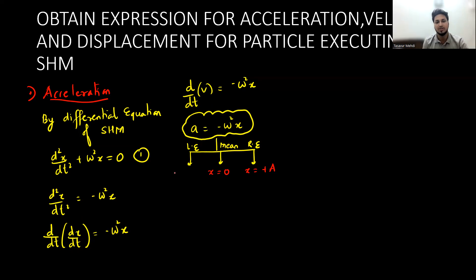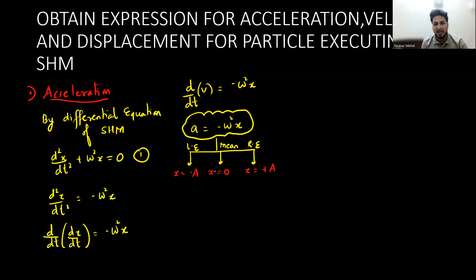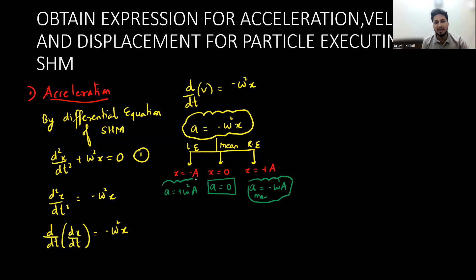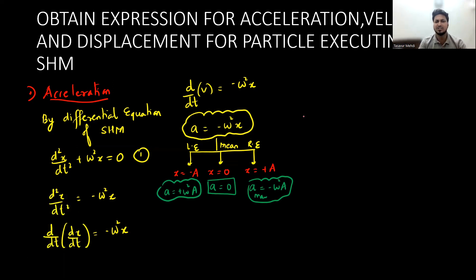You don't need to do anything beyond this for acceleration. If the particle is at the amplitude (left extreme), you put x = A, then acceleration = −ω²A. At the mean position, x = 0, so acceleration = 0. At the extremes, acceleration is maximum: ±Aω². That's acceleration — done and dusted.